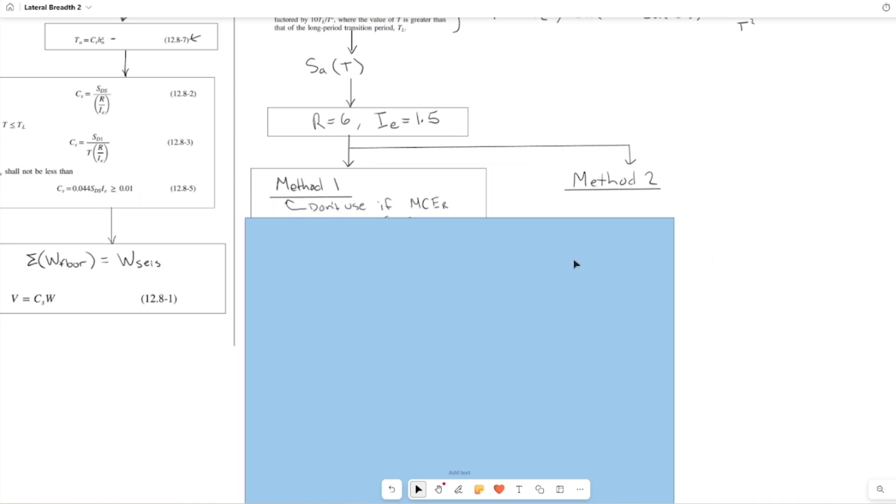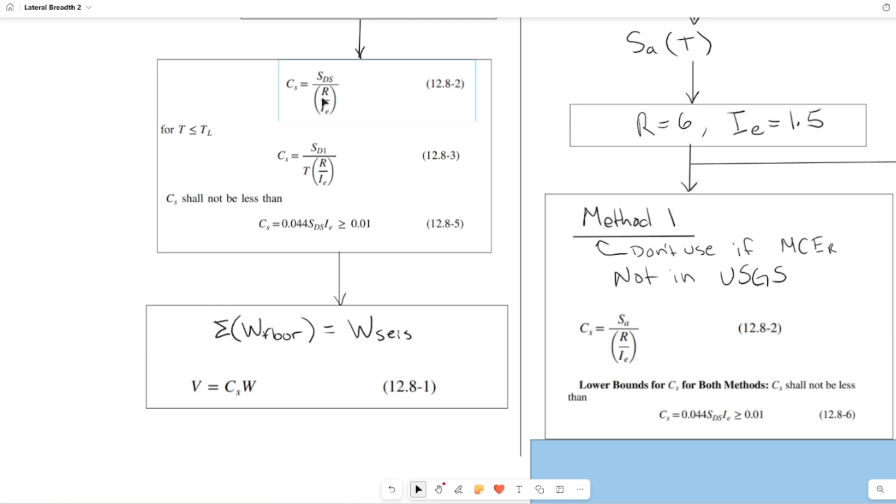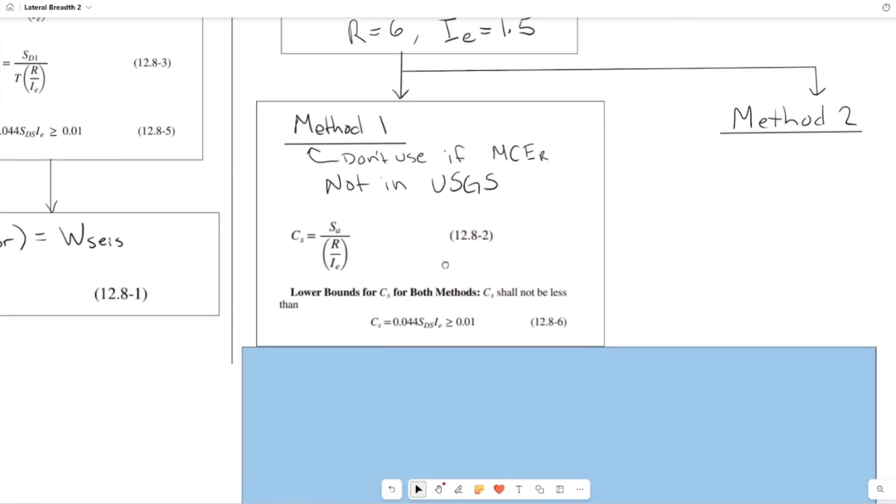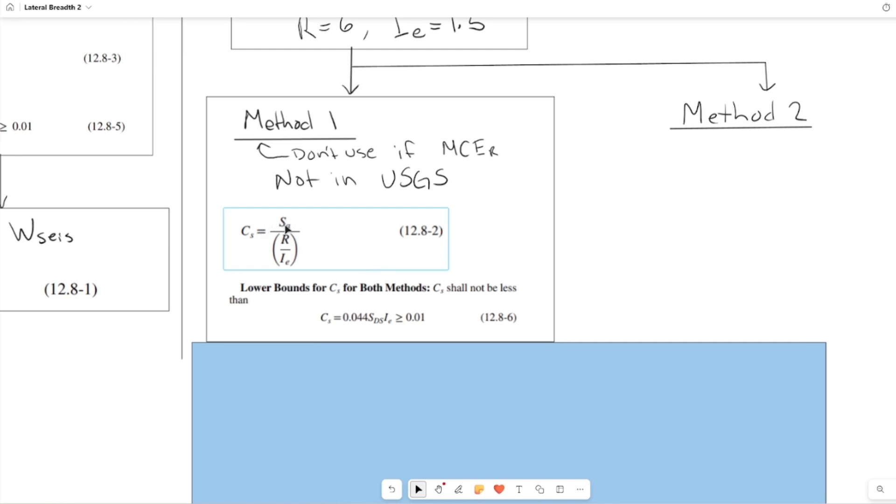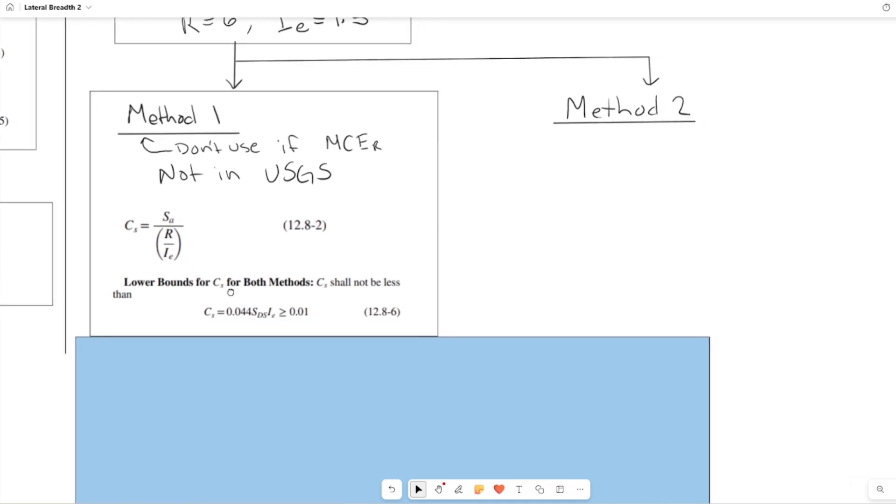Method number one: they say specifically, if you aren't finding your values in USGS, then don't use method one. The values for C sub s that they do suggest to use - the formula is pretty similar to what we've used in the past. But instead of SDS, like we saw before, SDS over r times i sub e, now you're just using S sub a. And S sub a is at the period of your structure. The lower bounds for this one are still pretty similar to what they were before. There are also other checks as well for method two, but only this one applies for method one.